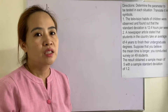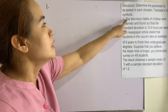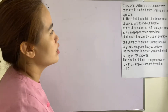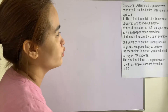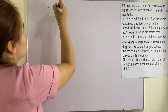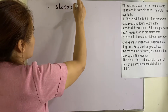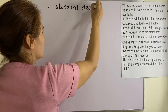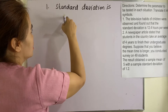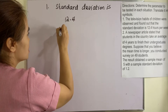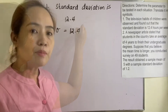In number one, the television habits of children were observed and found out that the standard deviation is 12.4 hours per week. So this is our parameter to be tested — the standard deviation is 12.4. Using the symbol for standard deviation: σ = 12.4.